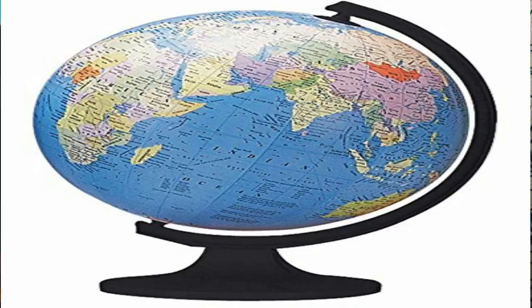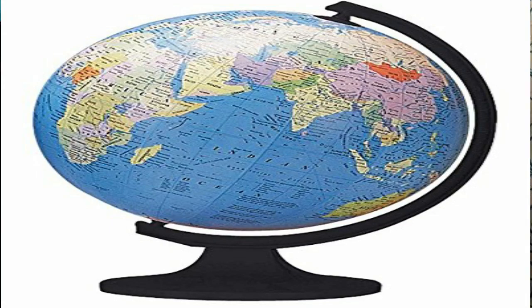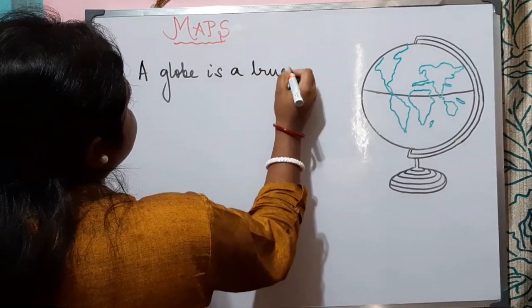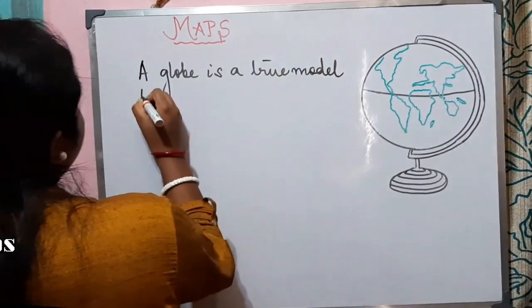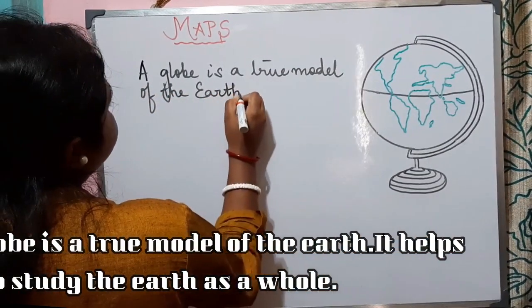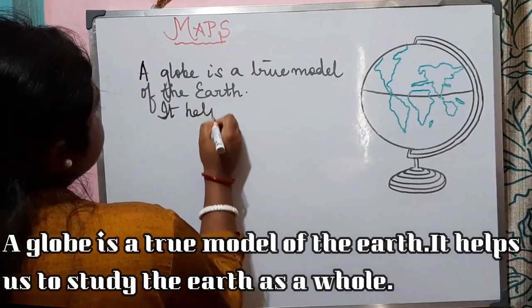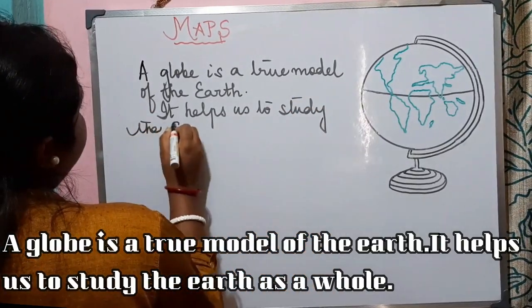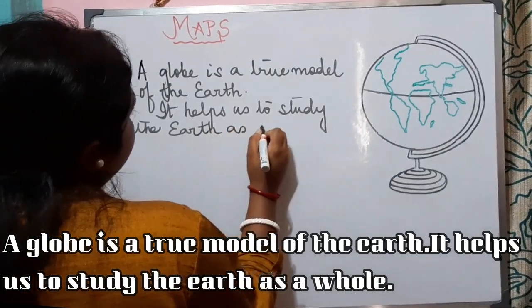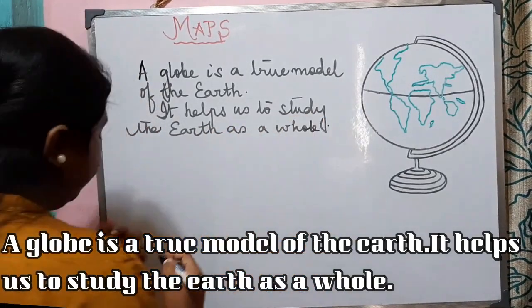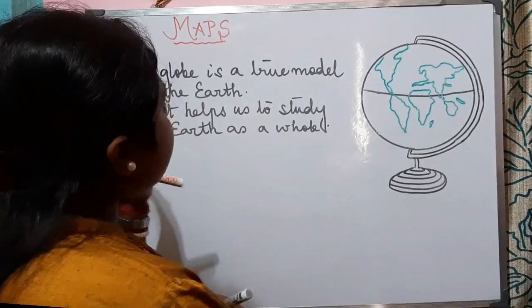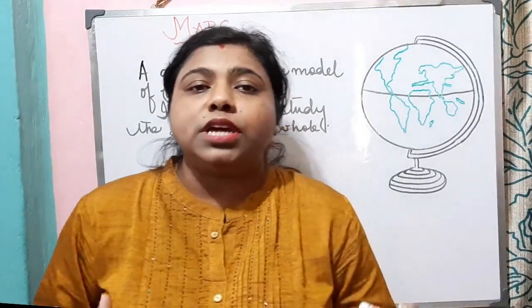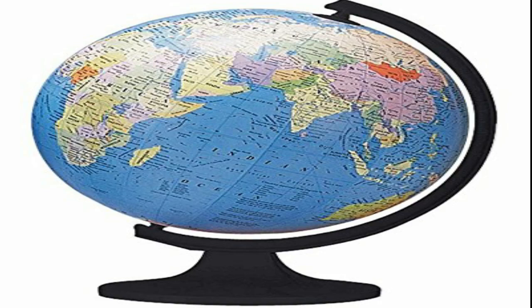So what is a globe? A globe is a true model of the earth. It helps us to study the earth as a whole. So a globe is a true model of the earth which helps us to study the earth as a whole, and we get to know about the earth's surface.